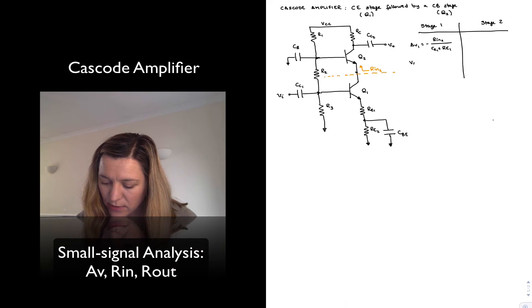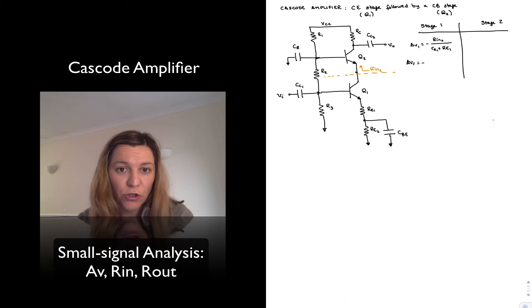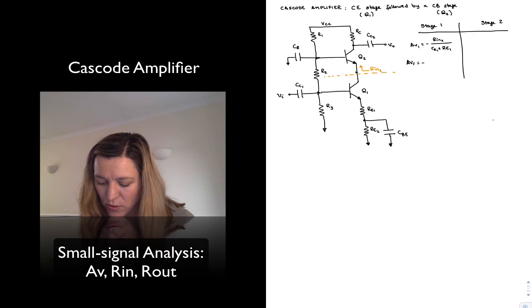Now I can see that RIN2, the resistance looking into the emitter for the second stage, is going to be equal to little re2. And you may wonder, why don't we see the resistance that is connected to the base of the transistor divided by beta? The reason is you have that CBE capacitor that is shorting the base of transistor Q2 to ground for AC purposes. And so that's really just going to be equal to negative little re2 divided by little re1 plus capital RE1.